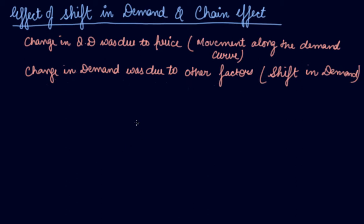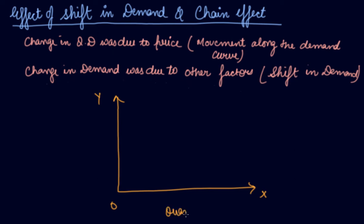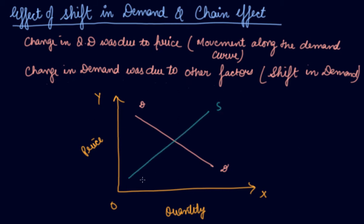In this video, we will study the effect of shifting demand on the equilibrium price. On this graph, quantity is on the x-axis and price is on the y-axis. Where the demand and supply curves intersect is the point of equilibrium, giving us an equilibrium quantity and price.